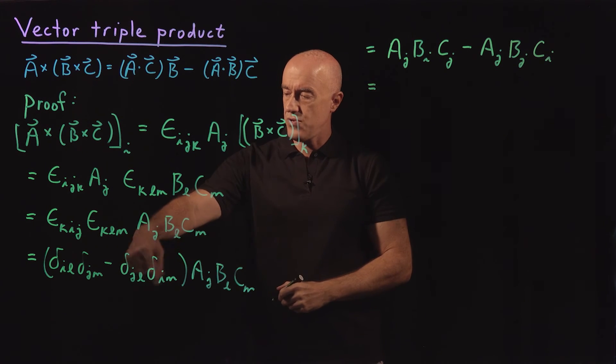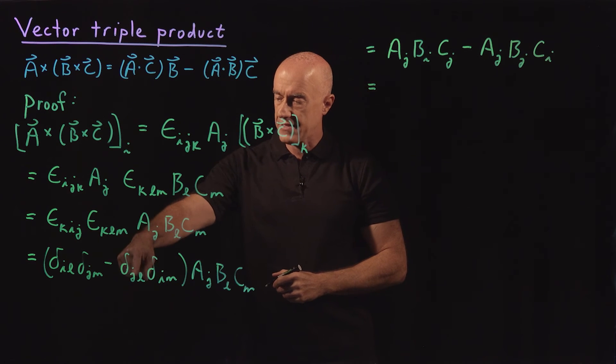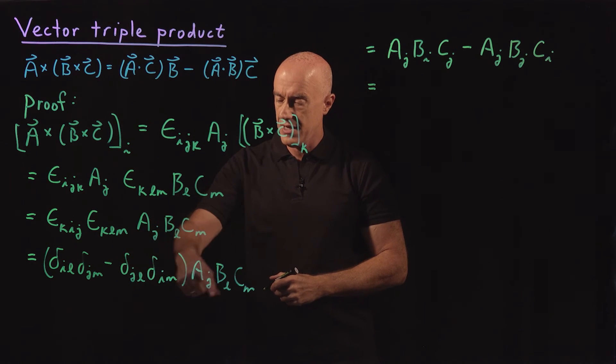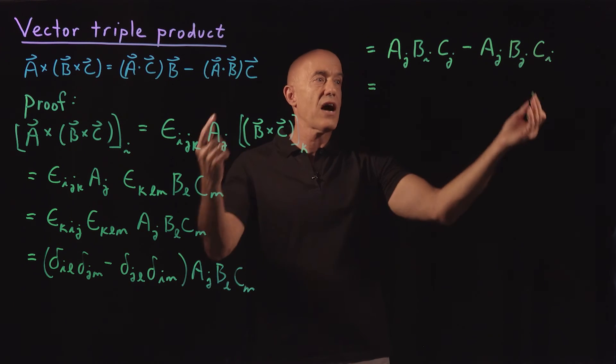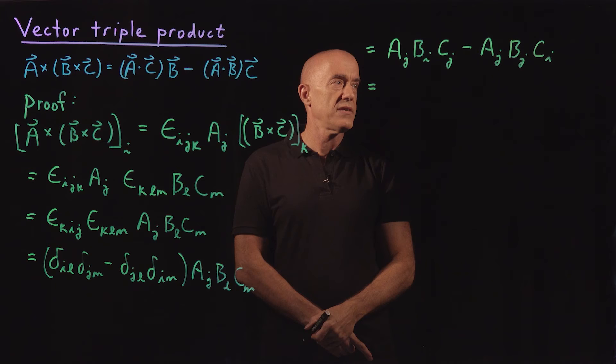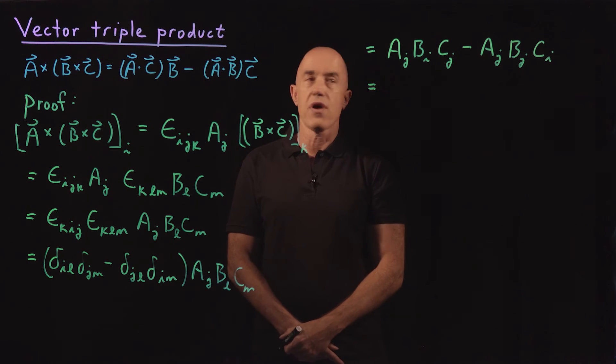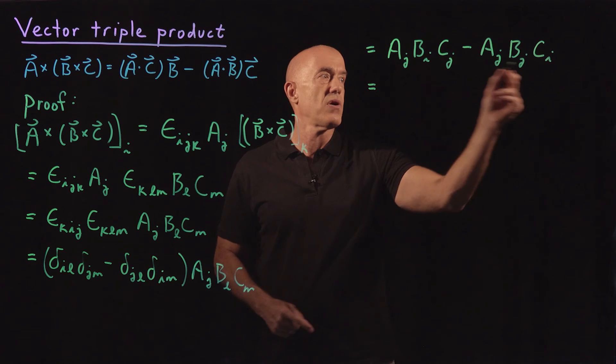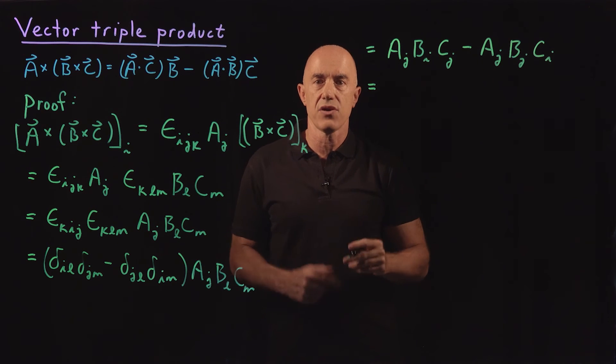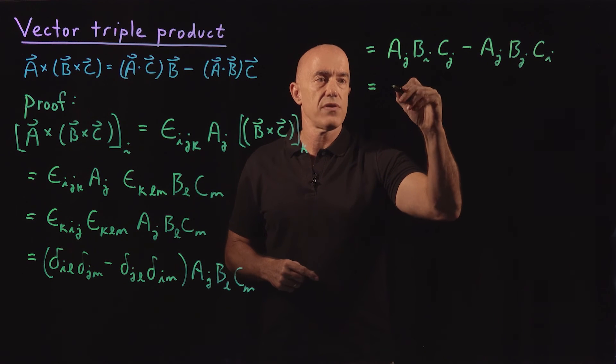So we've used the Einstein summation convention and we contracted the Kronecker delta times one of these components of the vectors. So now we don't have any Levi-Civita symbols, we don't have any Kronecker deltas. We want to make sense out of this. So remember we're looking at the i-th component. i is the only index which is not summed over. So I can rewrite this.